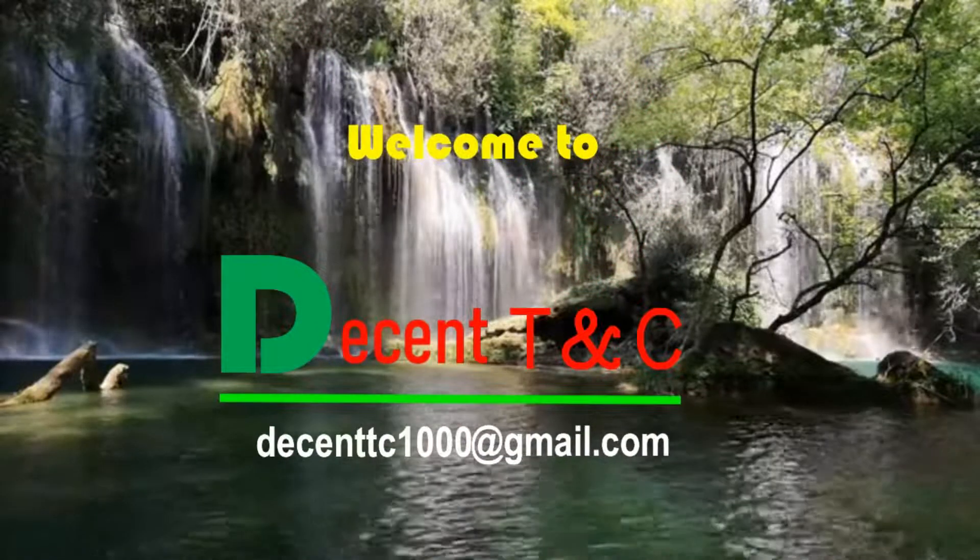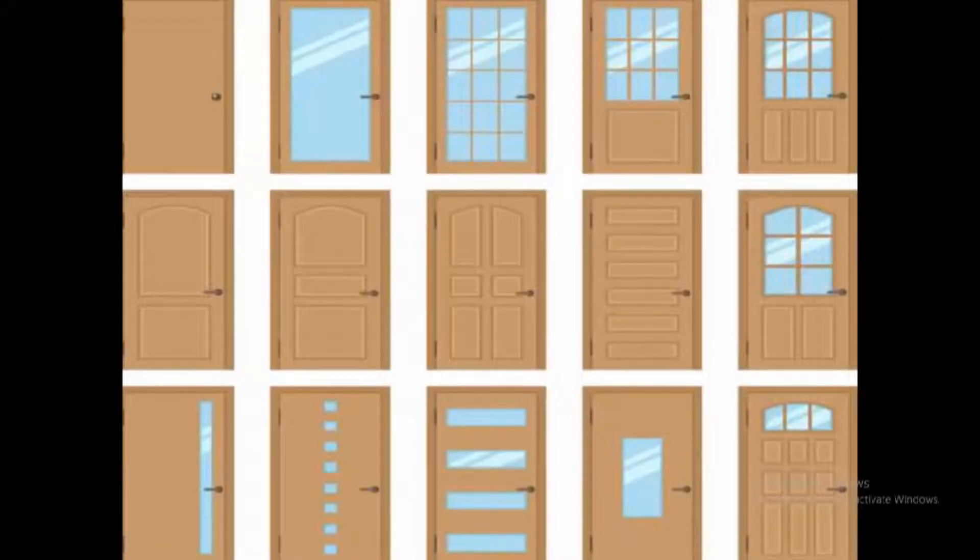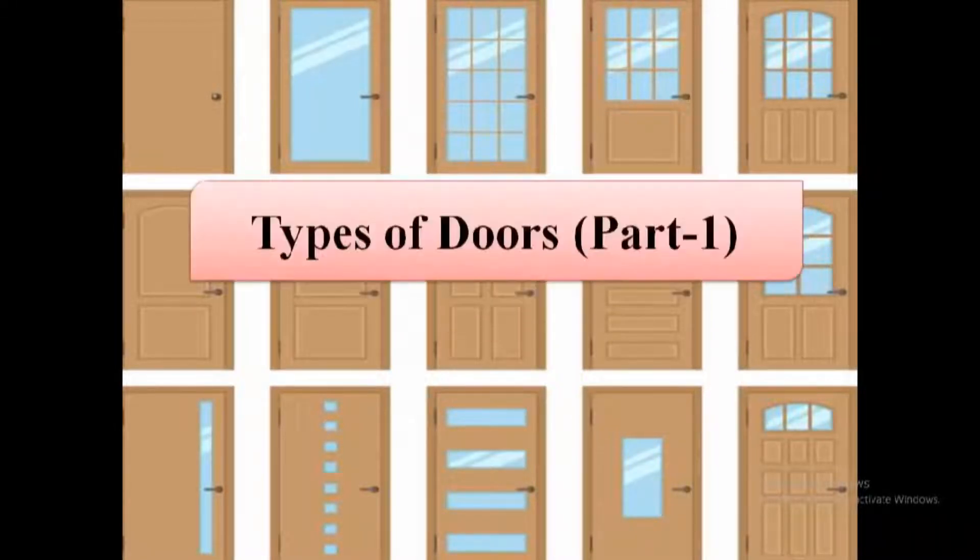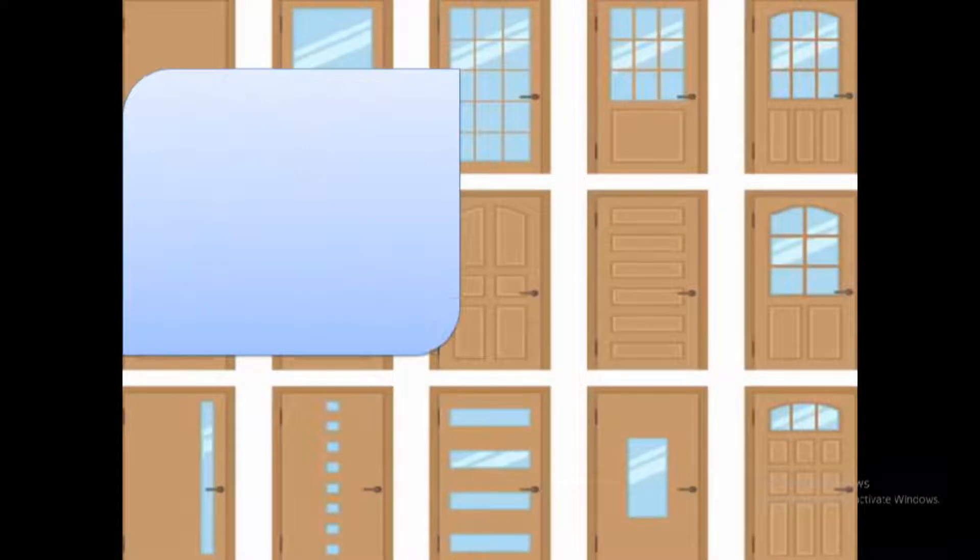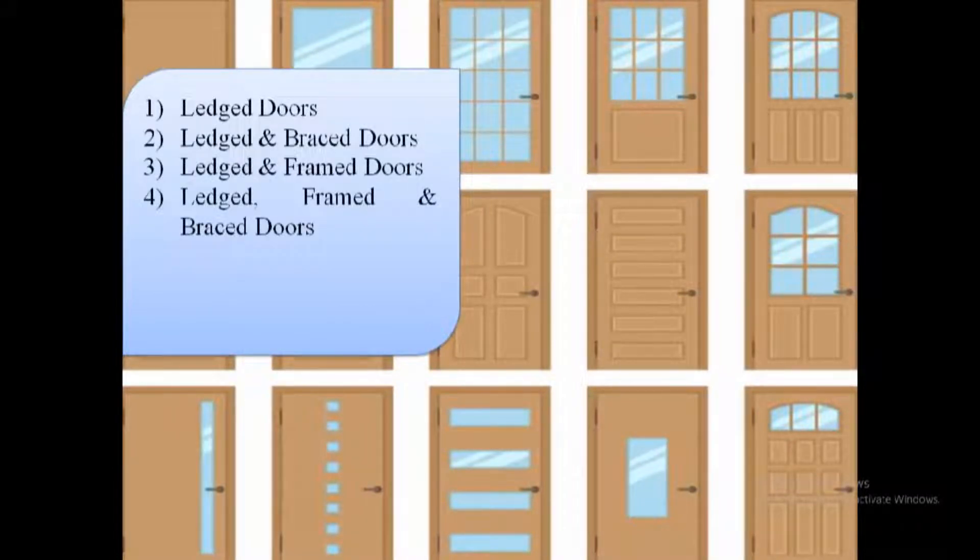Hello welcome to Decent TNC, your channel for educational tutorials. I'm Jean Marie. Today we are going to see different types of doors, part 1. What is a door in building construction? A door is an openable barrier secured in the wall opening.